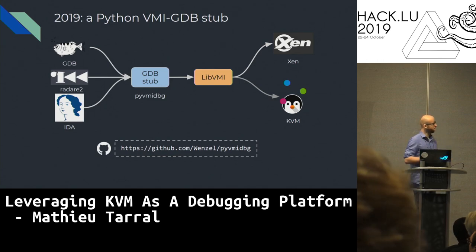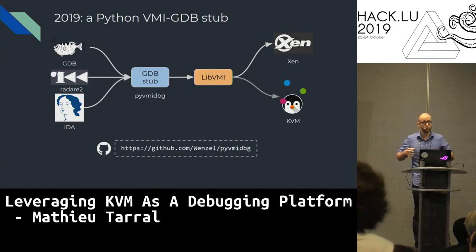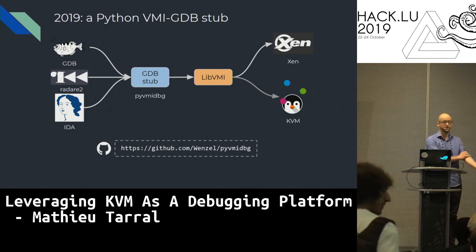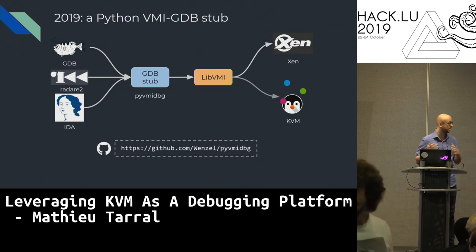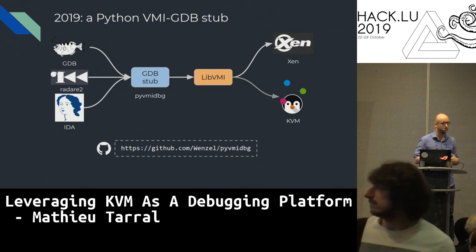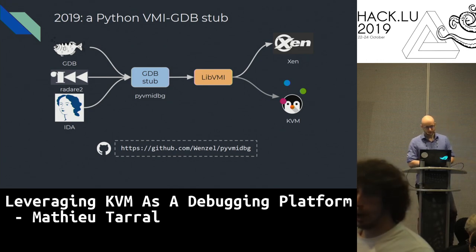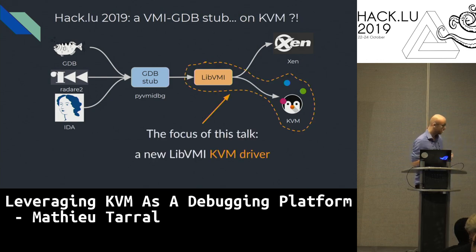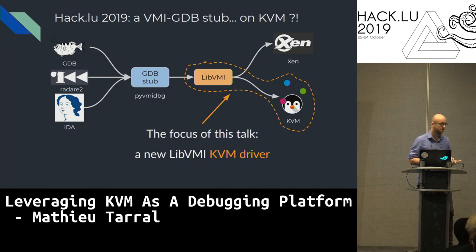Then during 2019, I switched to working on a Python VMI GDB stub that I can use with any GDB frontend, either RAD2 or GDB. The project is PyVMI DBG. And for Hack.lu 2019, my goal is to make this run on KVM with the new APIs.